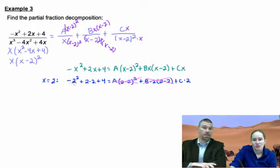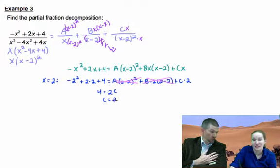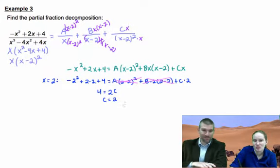Two squared is four, that's negative four plus four, that's zero, so we get four equals two C. Divide both sides and you get C equals two.